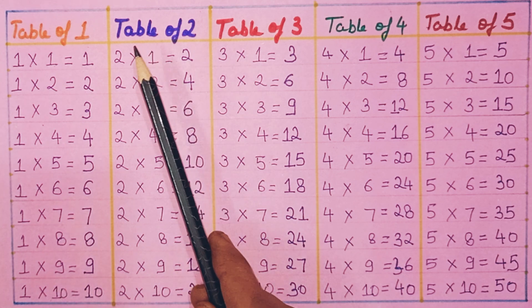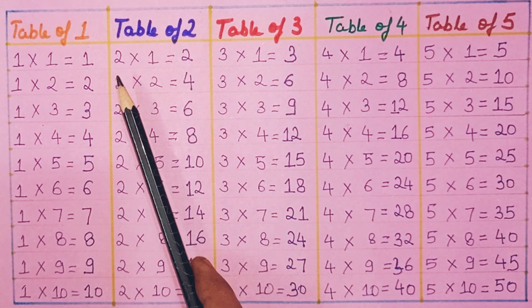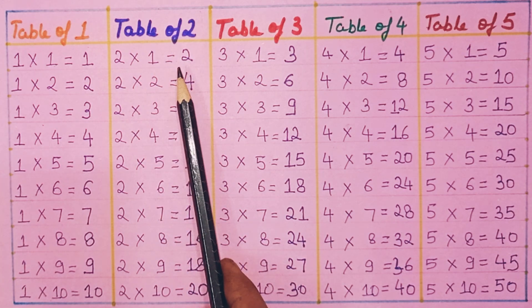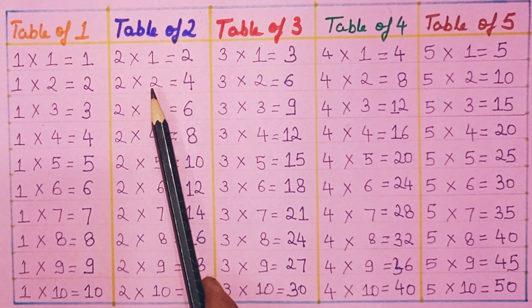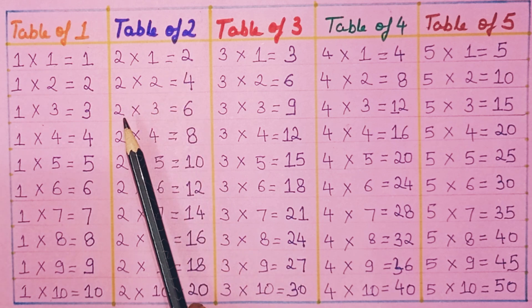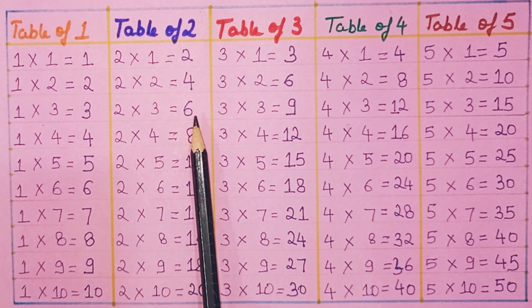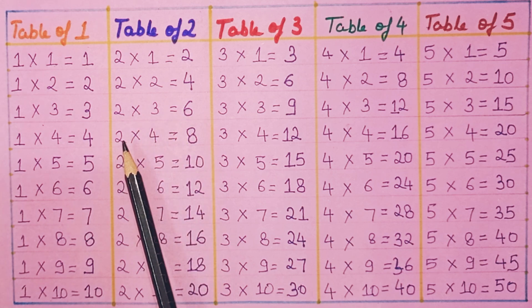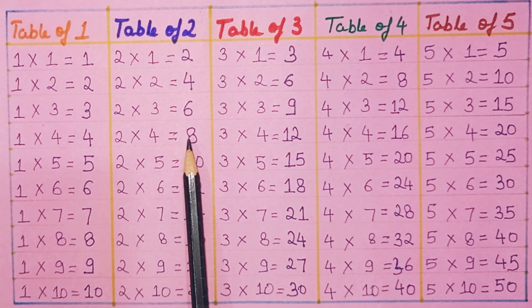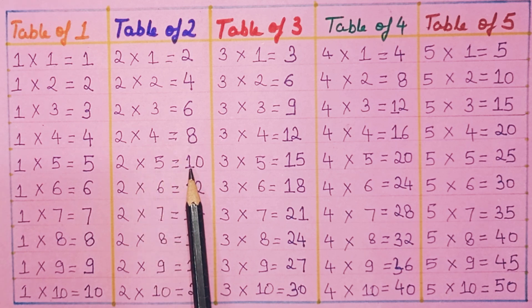Table of Two. Two ones are two. Two twos are four. Two threes are six. Two fours are eight. Two fives are ten.